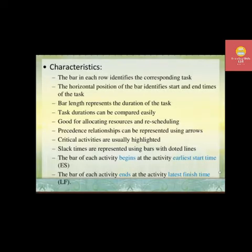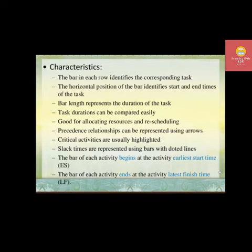The characteristics of a Gantt chart: the bar in each row identifies the corresponding task; the horizontal position of the bar identifies the start and end times of the task; bar length represents the duration of the task; task durations can be compared easily. It is good for allocating resources and rescheduling. Precedence relationships can be represented using arrows, critical activities are usually highlighted, and slack times are represented using bars with dotted lines.